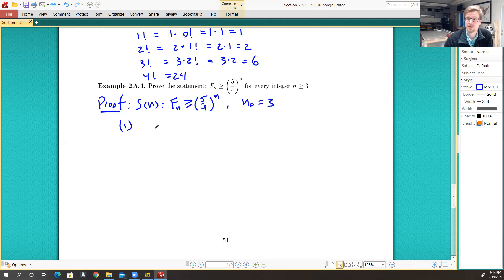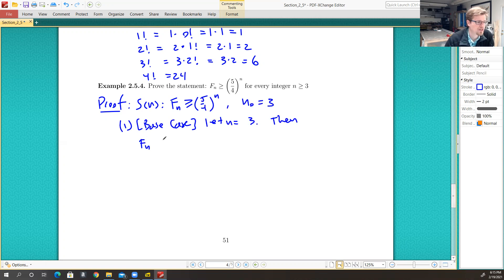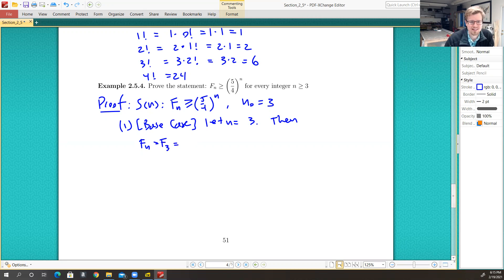So we consider the base case. For the base case, we let n be equal to 3. Then F sub n, we actually already saw this earlier that F sub 3 is exactly equal to 2. We just calculated that above. And connecting things all together, I can compute what 5 quarters cubed is.